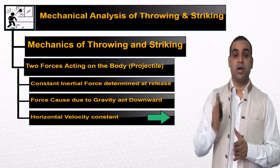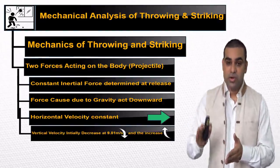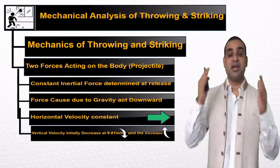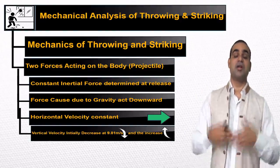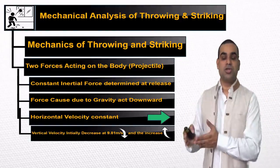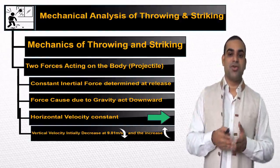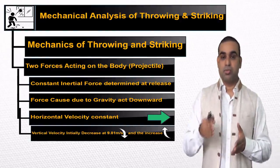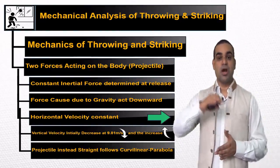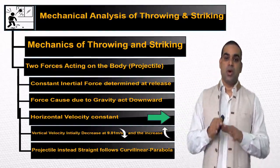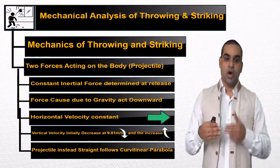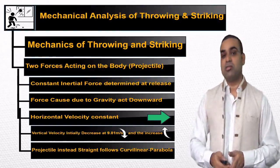The horizontal velocity — josekshit veg — remains constant. The vertical velocity initially will reduce because of gravity, then it will accelerate harder and the velocity will get more. So whether the horizontal velocity remains constant and the vertical velocity is changing at a constant rate, the projectile which is supposed to go in a straight line follows a curvilinear path — vakri bhag, jise hum curvilinear path kehte hain, usko hum parabola kehte hain — and that motion is called projectile motion.